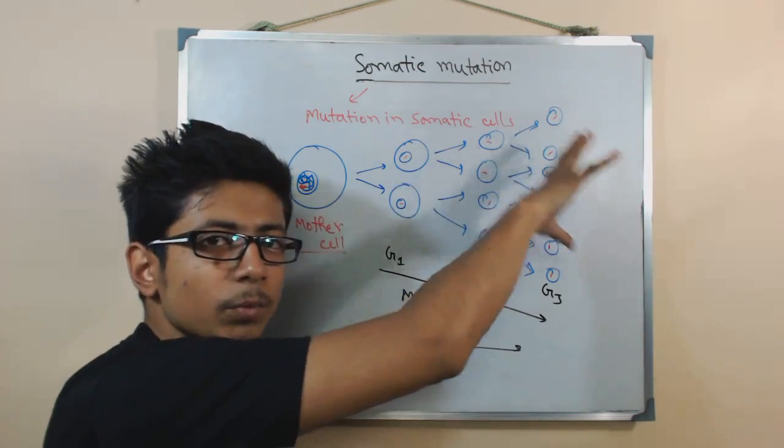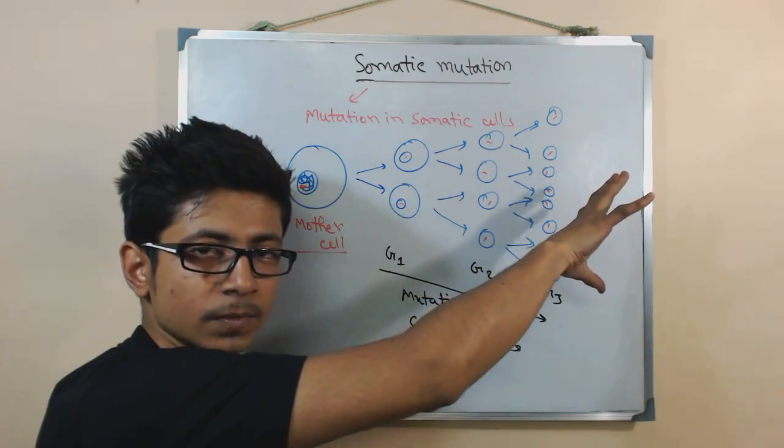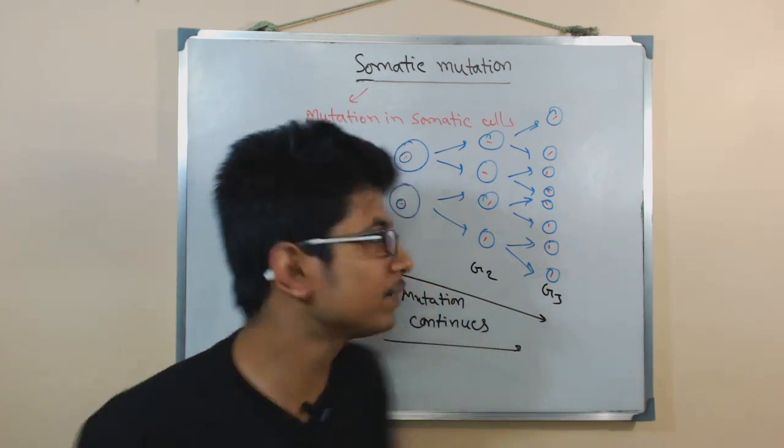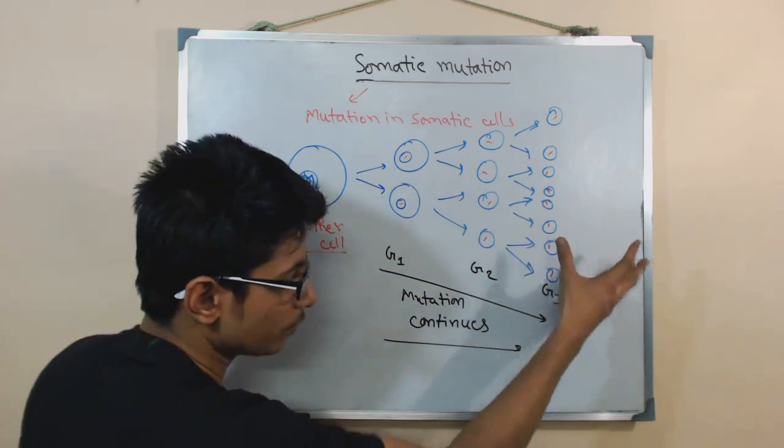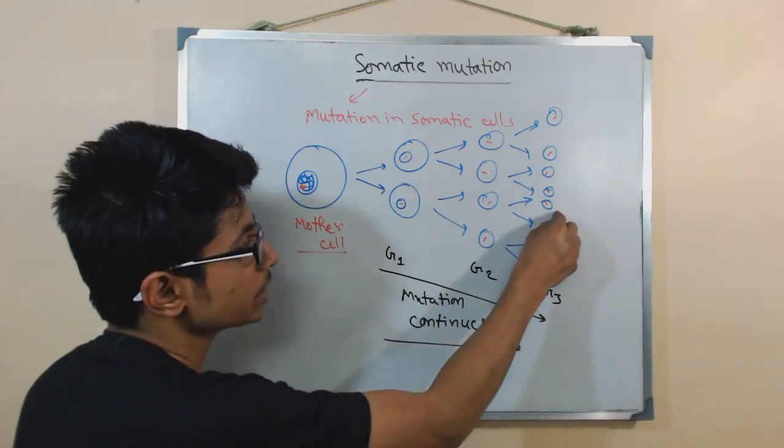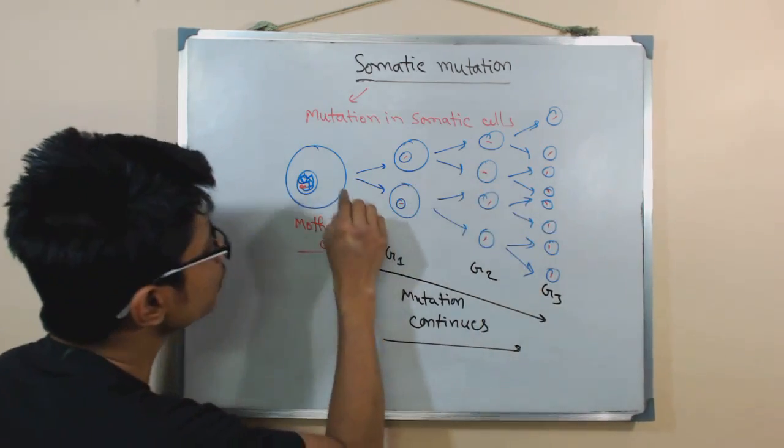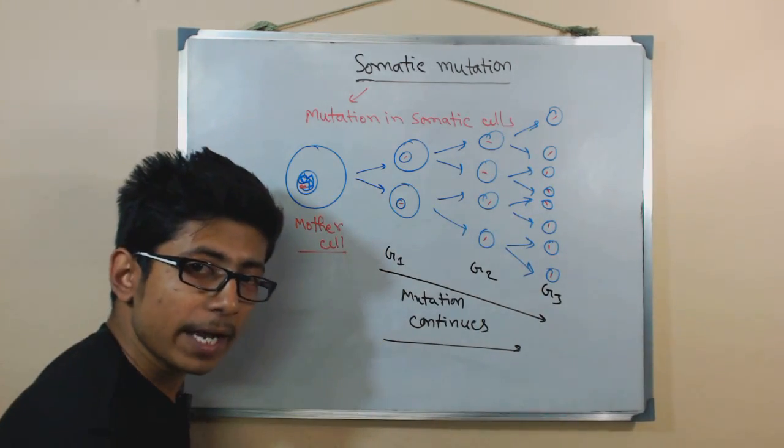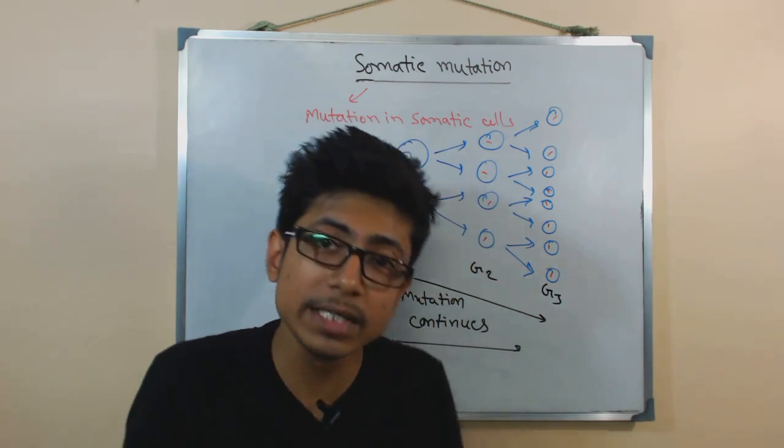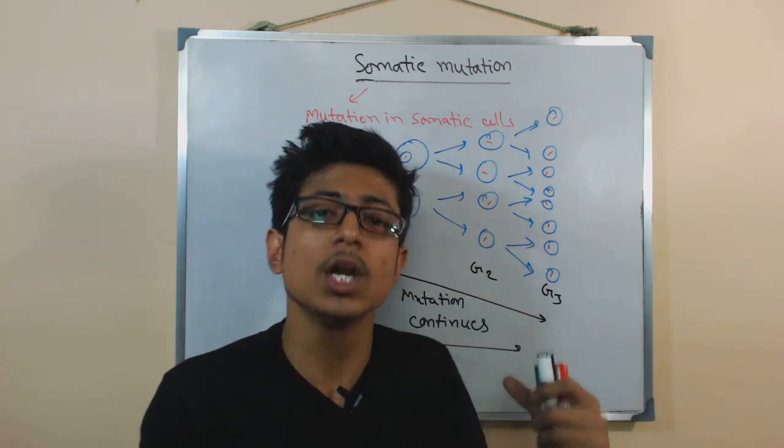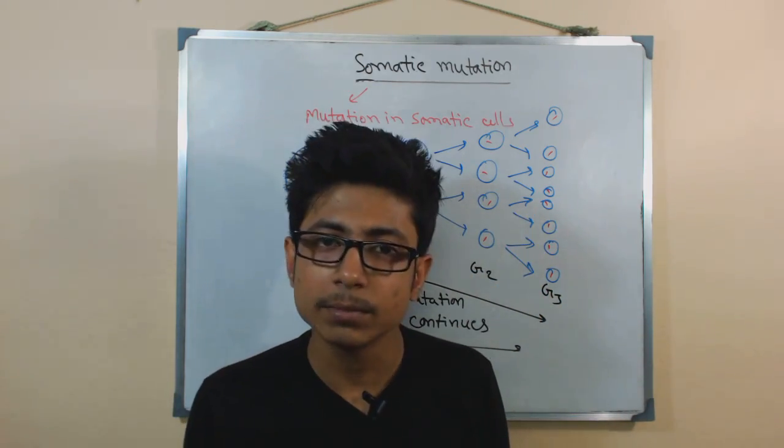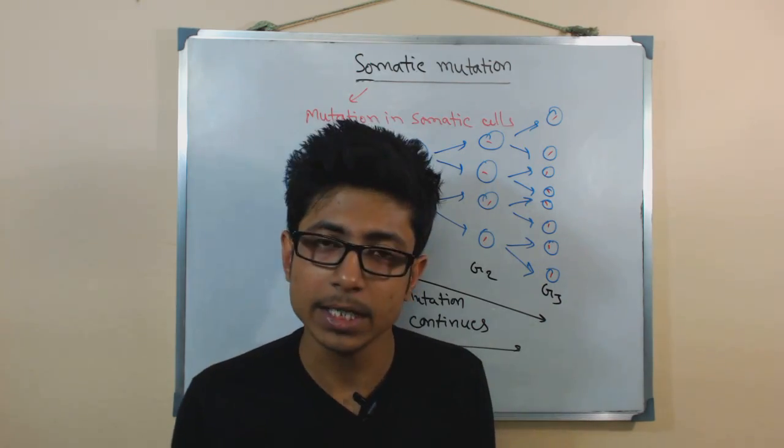What will happen? That person will suffer for that mutation, but once that person is died, the condition is lost. Because if that person produces the sperm, for example he is a male and he produces sperm for the offspring, that sperm will not contain this mutation because this mutation is present in the somatic cell. If there is no mutation in the sperm cell, the offspring for the diseased individual is going to be healthy because they don't have any link.